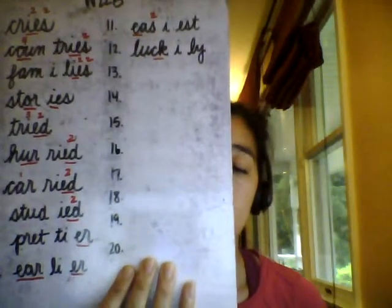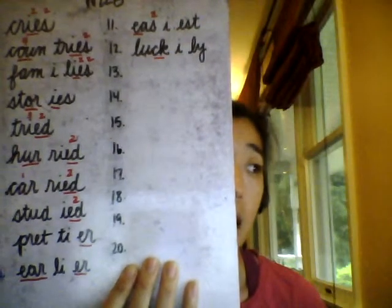Number 12: luckily. Luckily I received the important phone call. This time we're adding a two-syllable suffix: I-L-Y. The first syllable is the accented syllable: L-U-C-K. Then we have two unaccented syllables: I-L-Y. This I is the end of the word so we have to substitute a Y. Spell out loud with me: luckily, L-U-C-K-I-L-Y. Luckily.